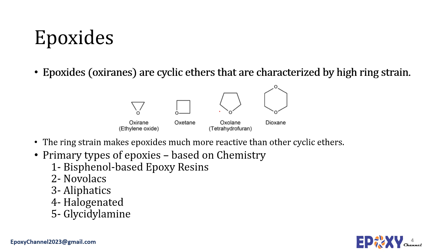This strain amounts to 114 kJ per mole in oxirane, a three-membered ring, and sums up to 106 kJ per mole in oxetane, a four-membered ring. So you can see it is 10 kJ per mole smaller than the three-membered ring. In epoxy systems we have such a ring, and the reactivity of the epoxy can be attributed to this ring.